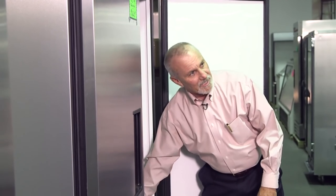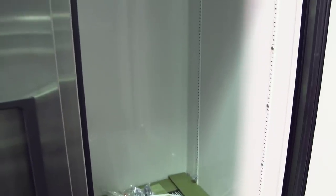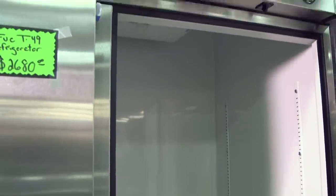All the interiors on commercial refrigeration have coved corners so they're easy to get in and clean. The difference between a home refrigerator and a commercial refrigerator is it's wide open with nice rounded corners so you can get in and clean everything—no little compartments and doors and levers and knobs.